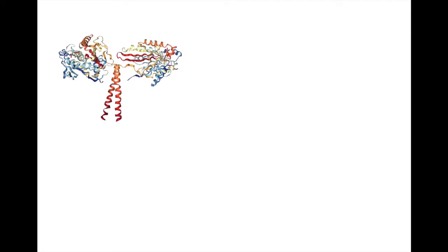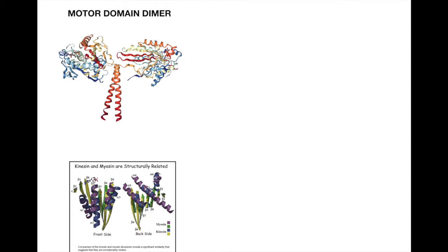Let's further discuss the structure of the motor domain. The motor domain is a dimer, with each monomer composed of 370 amino acids, 320 of which have been conserved and are also seen in myosin, an actin-based motor. When we compare the structures of kinesin and myosin, we see that they are very similar, which means they likely have a similar evolutionary past.